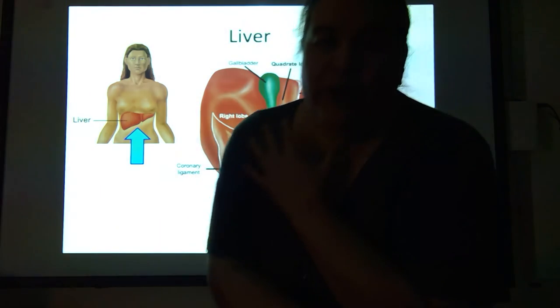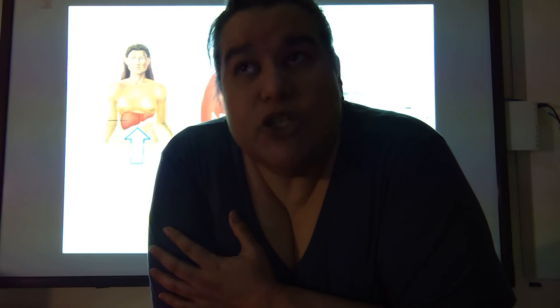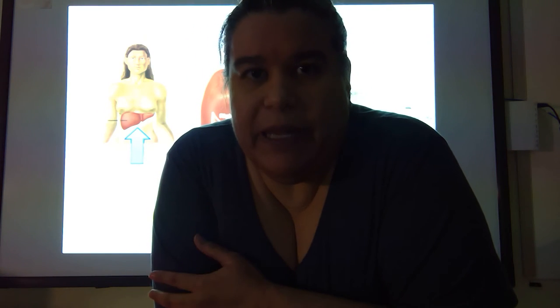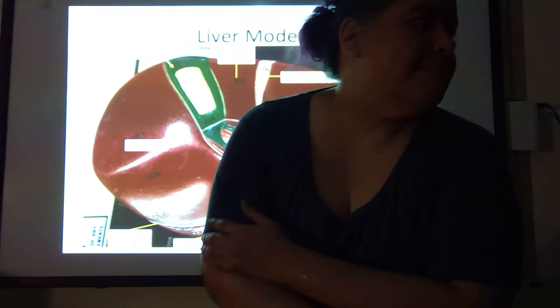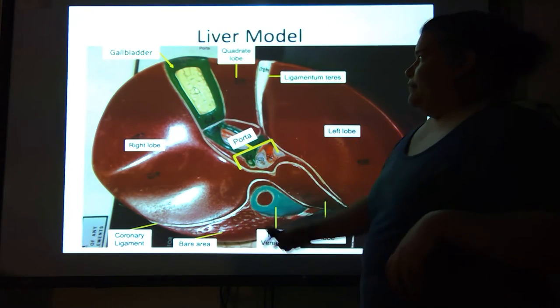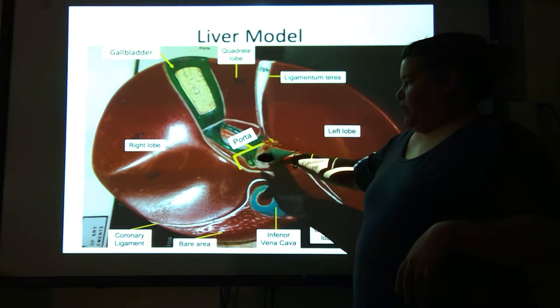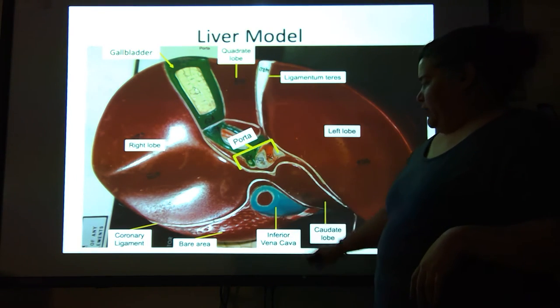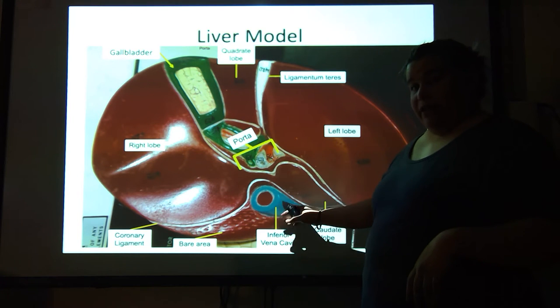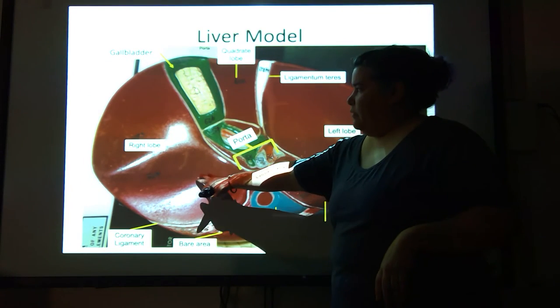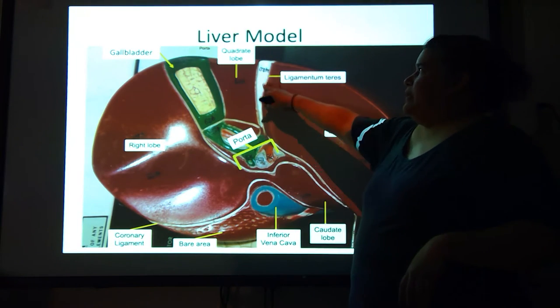Is the liver a living thing inside your body? Yes, it has living cells, so it does need freshly oxygenated blood. That's what the hepatic artery does — it carries freshly oxygenated blood to the liver cells. So again, looking at the underside: you've got the gallbladder, the quadrate lobe, there's the porta, the caudate lobe. That's just the inferior vena cava. The bare area, there's that coronary ligament, the right lobe, the left lobe, the ligamentum teres.